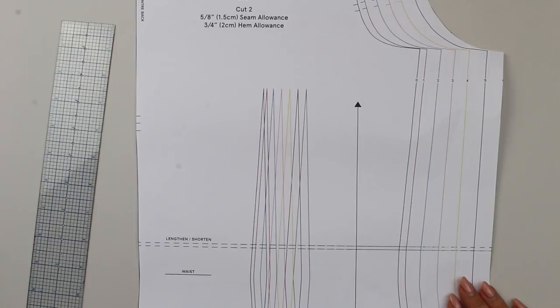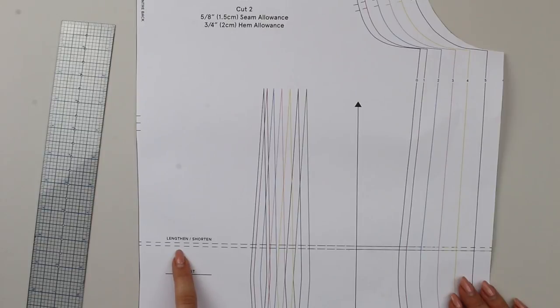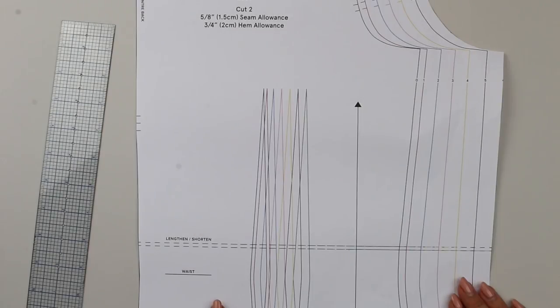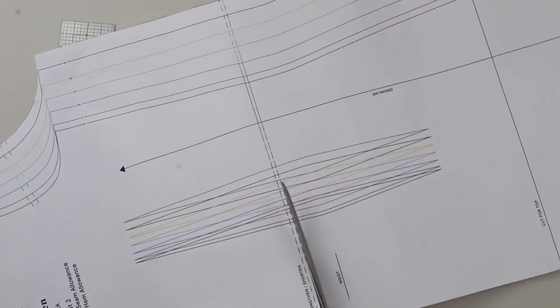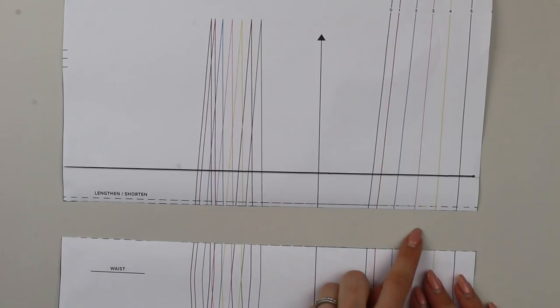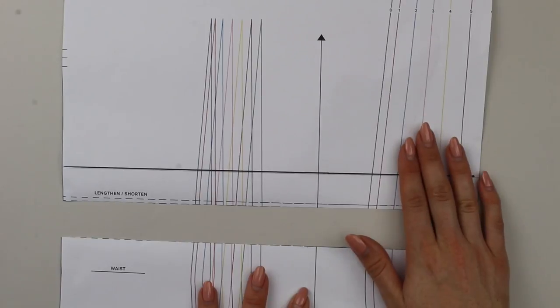You're going to begin by comparing your back length measurement to the back length provided with the pattern, and this will tell you whether you need to amend anything at the lengthen or shorten line. Your back length may be longer or shorter than what the pattern was designed for. I'm going to show you how to shorten the pattern first, then lengthen it. The first thing I'd like you to do is cut along one of these lines — I recommend cutting along a line rather than in the middle, as that can be a little bit wishy-washy. Now that I've cut along the line, I have a free bottom half and a top half of the pattern.